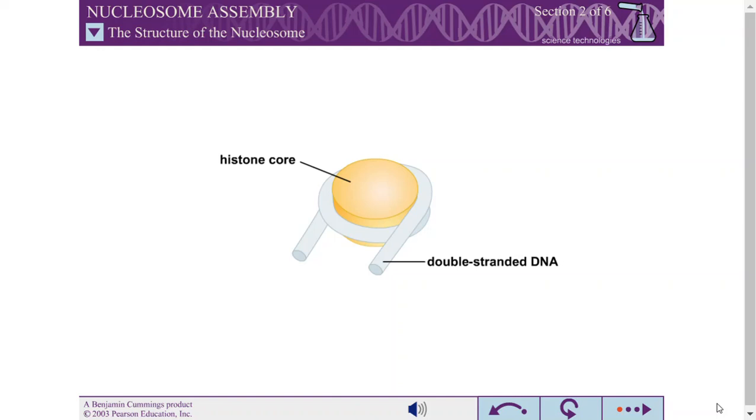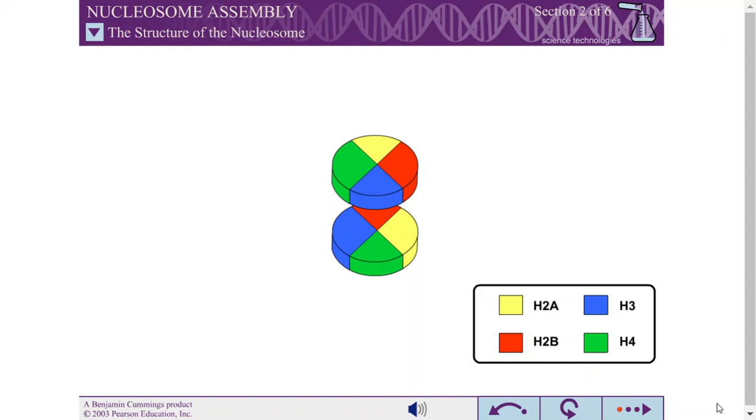Eight histones, two each of histone proteins H2A, H2B, H3, and H4 form the protein core of the nucleosome.